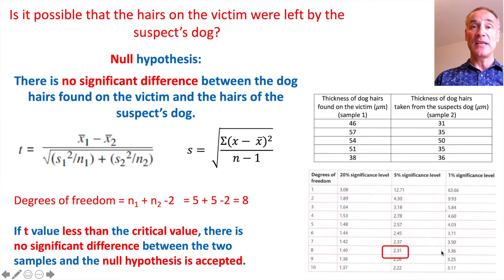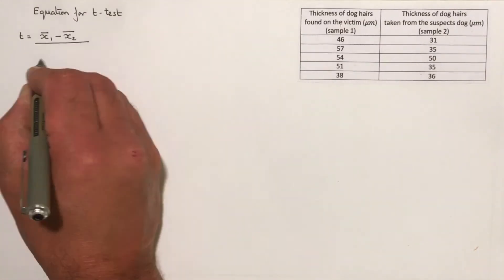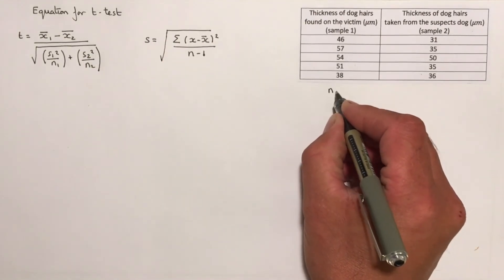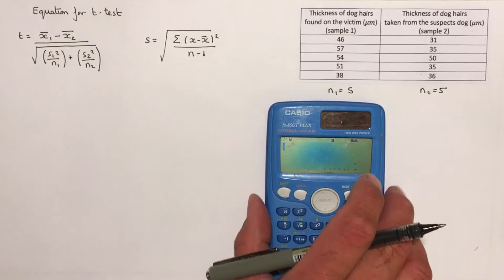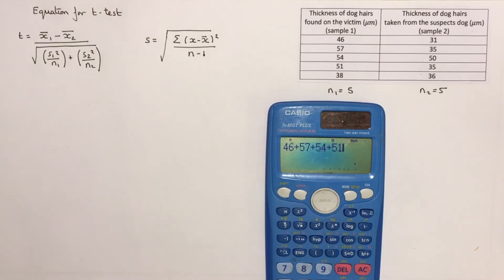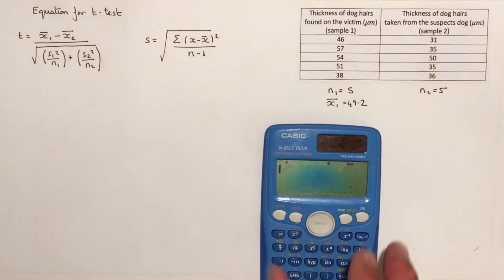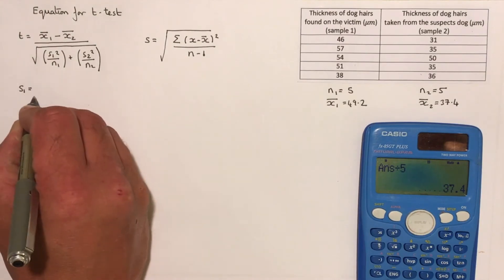I'm now going to show you a worked video taking you through the first question. First I'll write out the equation for the t-test and for standard deviation. I record sample sizes: n1 is 5 and n2 is 5. I calculate the mean for sample one by adding the values and dividing by 5, which gives 49.2. The mean of sample two works out at 37.4.